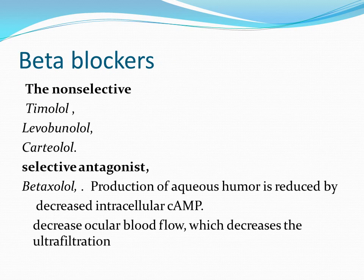Beta blockers are one of the first-line drug groups used in the management of glaucoma. Topical beta blockers, in contrast to miotics, do not affect pupil size, tone of ciliary muscles, or outflow facility, but they lower intraocular tension by reducing aqueous humor production. This results from down-regulation of adenylyl cyclase due to beta-2 receptor blockade in the ciliary epithelium, with a secondary effect from reduction in ocular blood flow.